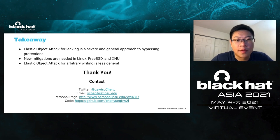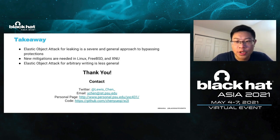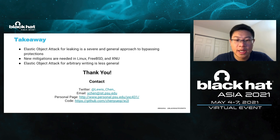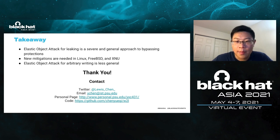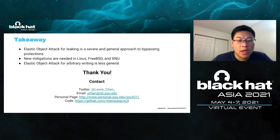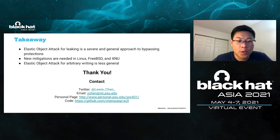To summarize the takeaways: first, using elastic objects for leaking is a severe and general approach to bypassing protections in the kernel. Second, new mitigations are needed in Linux, FreeBSD, and XNU to prevent elastic object attacks. We evaluated our proposed mitigation and showed its performance overhead is negligible while security improvement is clear. Finally, elastic object attack for arbitrary writing seems less general, but more study is required to confirm this claim. Thanks for listening. If you want to know more about me and my other projects, or didn't have a chance to ask questions, feel free to follow me on Twitter, contact me via email, or check my personal page. We have released the code on GitHub and welcome your contribution.